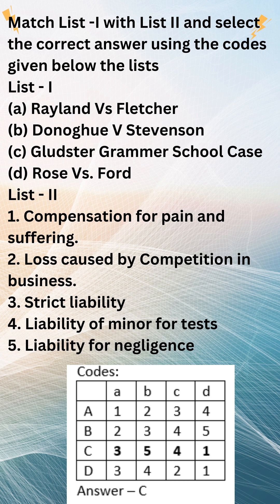Donoghue v. Stevenson: This case established the principle of liability for negligence. This means that a person is liable for any damage caused by their negligence, even if they did not intend to cause that damage.